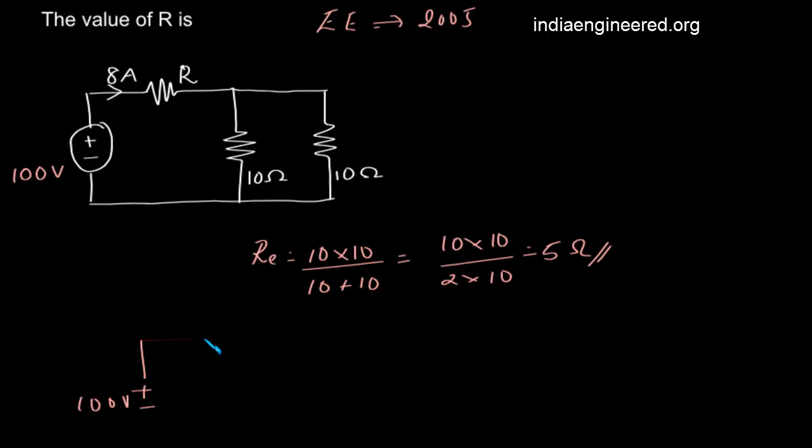With 100 volts here, R resistance here, and 5 ohm here. We have 8 amperes of current flowing through it. Now we can simply apply KVL.